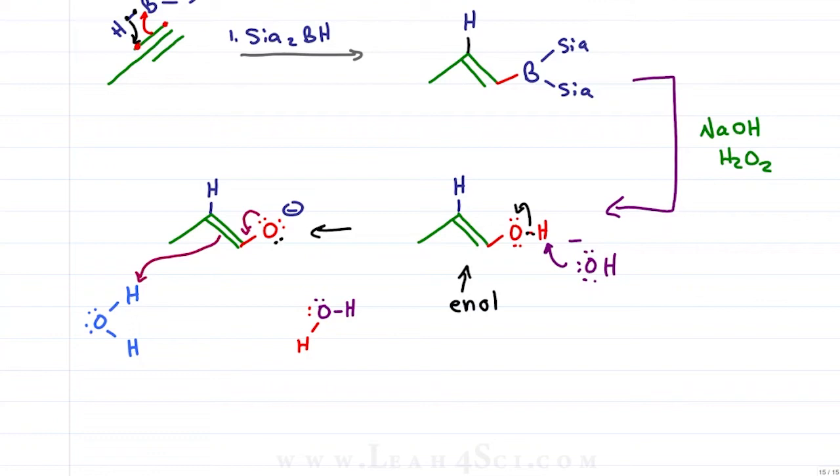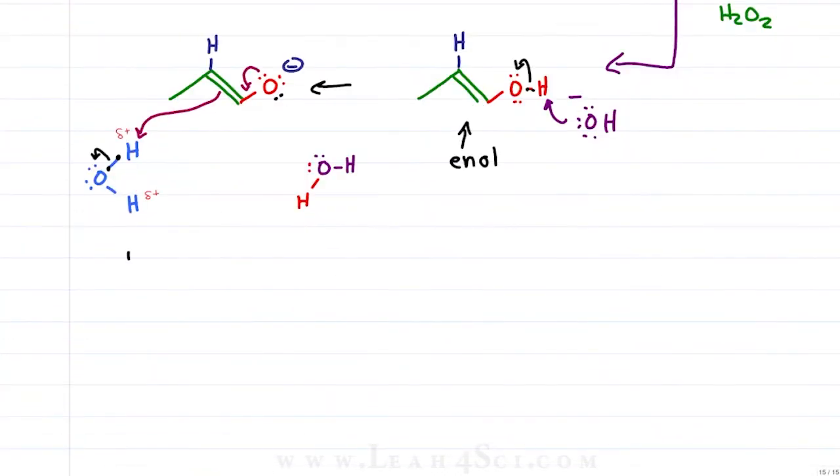How is neutral water positive? In a basic solution, the partially positive hydrogen on a water molecule is the most positive compared to all the negativity floating around. When the hydrogen is grabbed, the electrons between oxygen and hydrogen will collapse onto oxygen to regenerate the hydroxide catalyst, the one that we used up over here.